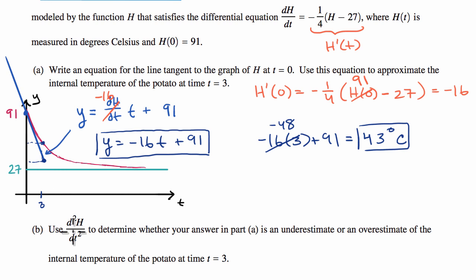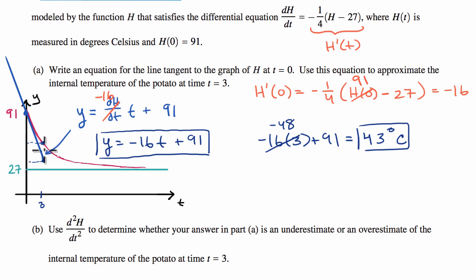The second derivative can help us know about concavity. It will let us know whether our slope is increasing or decreasing over this interval, and then we can use that to determine whether we overestimated or not.